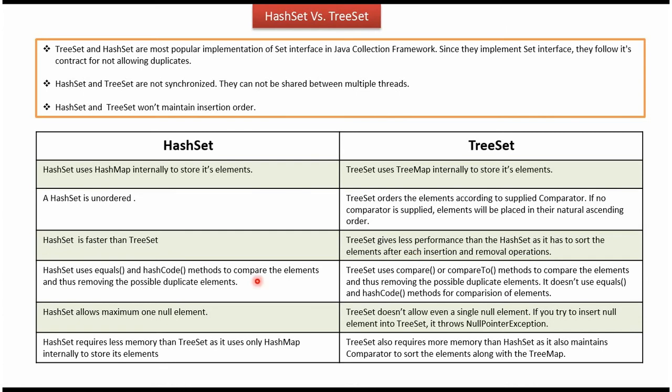To compare elements, HashSet uses the equals and hashCode methods. TreeSet doesn't use equals and hashCode methods to compare elements. Instead, TreeSet uses compare and compareTo methods to compare the elements.